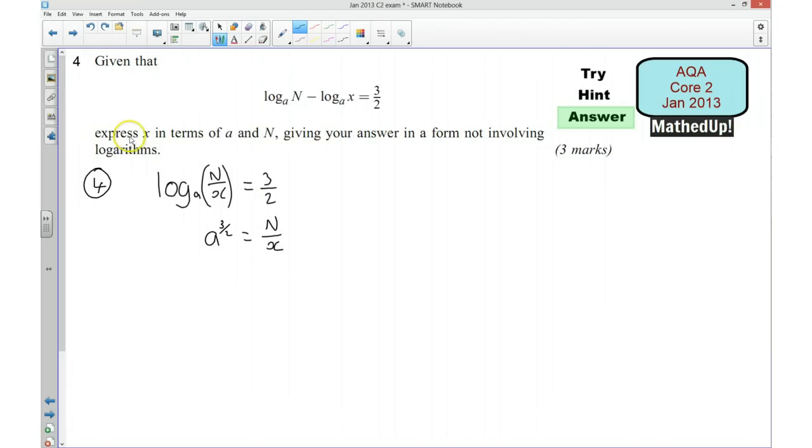Just going back to the question, we want to express x in terms of a and N. So I need to rearrange this and I'm going to times my x over to this side and I'm going to divide by my a to the power of 3 over 2 onto the other side. So I'm going to end up with x is equal to N over a to the power of 3 over 2.